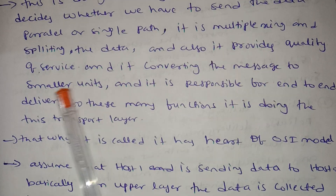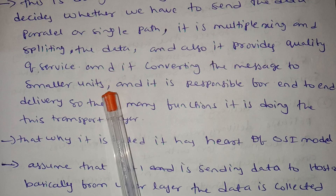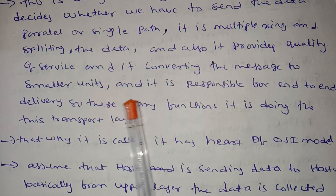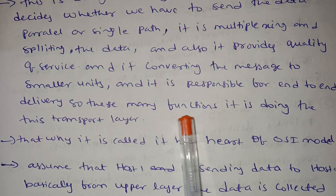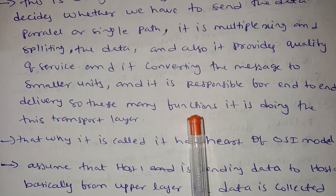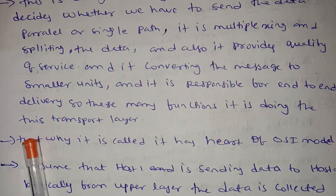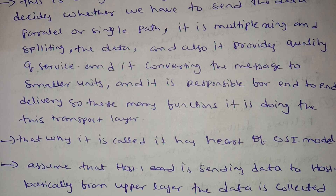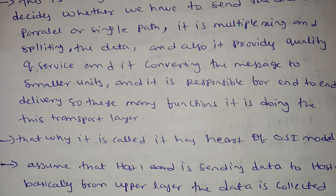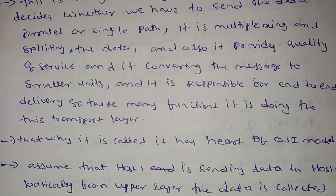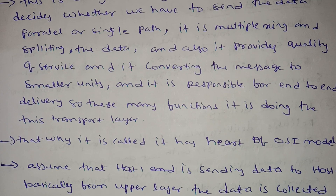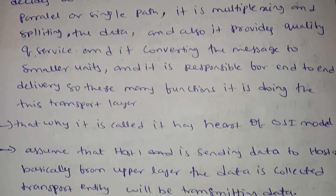It converts the message into smaller units and is responsible for end-to-end delivery. Because of all these functions it performs, the transport layer is called the heart of the OSI model.